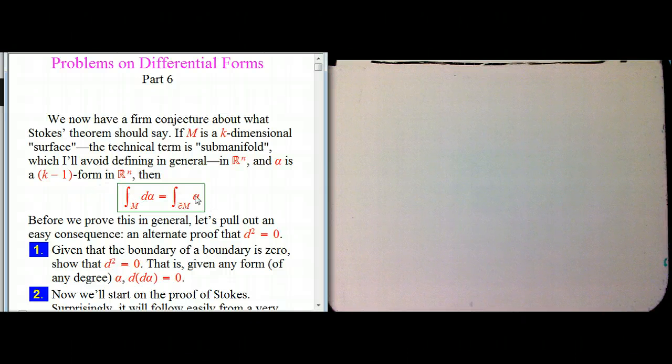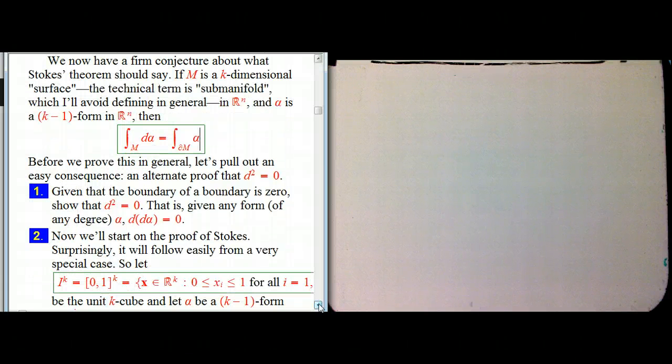And this is incredibly general. This is true in incredible generality, well beyond what we can actually prove or even talk about. But let's assume that for a second, and I want to show that gives you an alternate explanation for why d squared is zero.